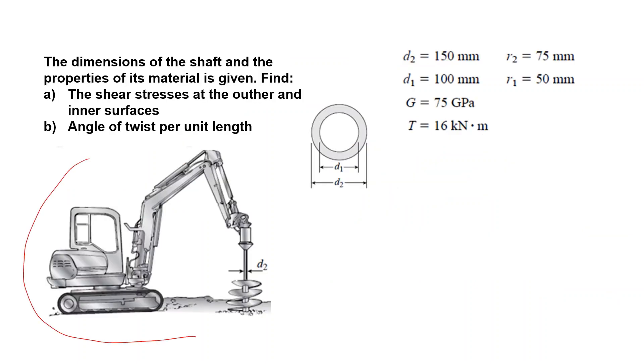A shaft is used and the shaft's dimensions are given as here. We have a tubular shaft. The external and internal dimension and radius values are given. For the material, the shear modulus is given and the torque is also known. The questions are: the shear stresses at the outer and inner surfaces, angle of twist per unit length is asked.